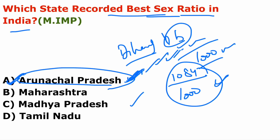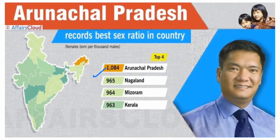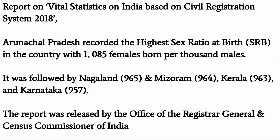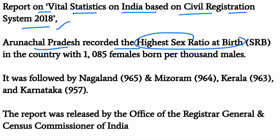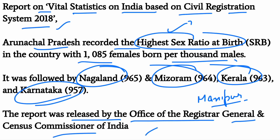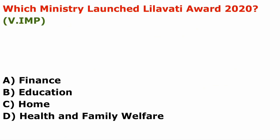Notably, all three top states come from northeastern India — Arunachal Pradesh first, Nagaland second, Mizoram third. Arunachal Pradesh recorded the highest sex ratio at birth: 1085 females per 1000 males. Kerala is fourth and Karnataka fifth. The most important thing to remember is the highest — Arunachal Pradesh — and the lowest sex ratio state, which is Manipur. Manipur is also a northeastern state. The report was released by the Office of the Registrar General and Census Commissioner of India.